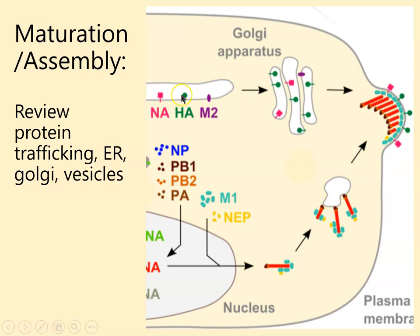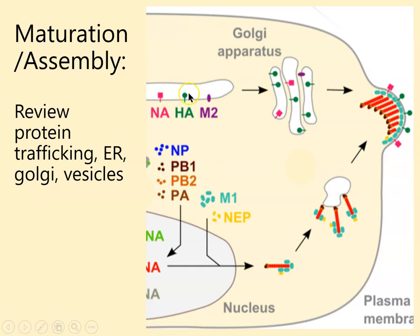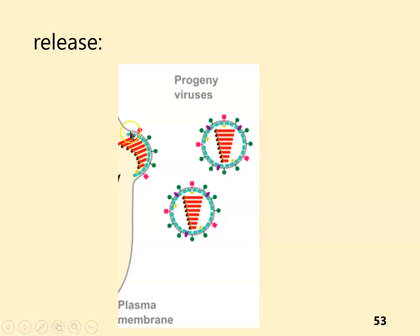The other pathway is the normal protein trafficking for membrane-bound proteins. The endoplasmic reticulum is where they're made; through vesicles they're sent to the Golgi; they're organized in the Golgi; and through vesicles they are sent to the cell membrane. These are the spike proteins — neuraminidase and hemagglutinin. And the M2 proton channel would be inserted somewhere in the membrane. That's maturation and assembly.